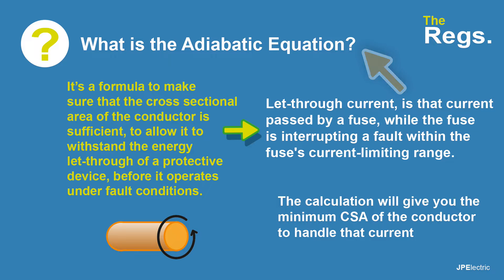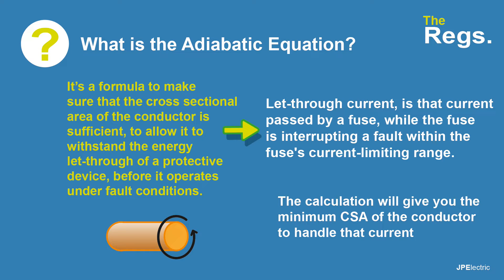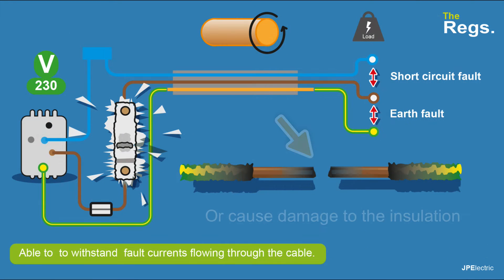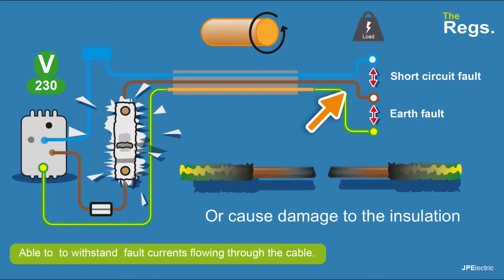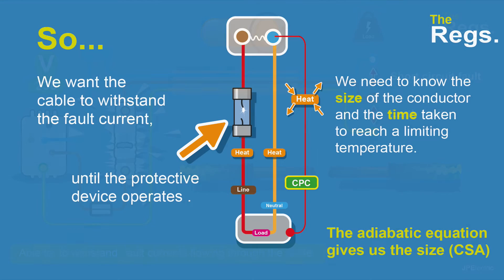So what is the adiabatic equation? It's a formula to make sure that the cross-sectional area of the conductor is sufficient to allow it to withstand the energy let-through of a protected device before that device operates under fault conditions. Basically, we want the cable to be big enough so it can handle fault currents. During a fault, you can get hundreds or thousands of amps flowing, and that can heat up the cable. If it heats up too much, that cable can snap, just like the fuse wire in a rewindable fuse. Your conductors for the installation can also heat up and break if they're incorrectly sized for any fault currents that may flow. So it's an important calculation.